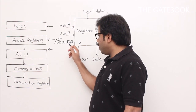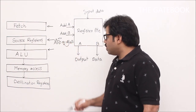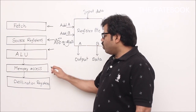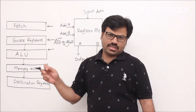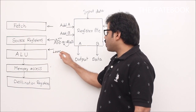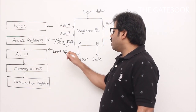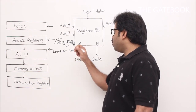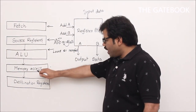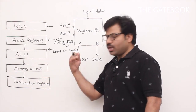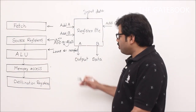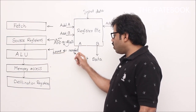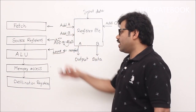After the ALU stage, we have to store the result back to R1 — that we will do in the fifth stage. But in the fourth stage, what I do is memory access. For example, if the instruction is LOAD R1, 1000(R2), then in this memory access stage I will be accessing main memory.